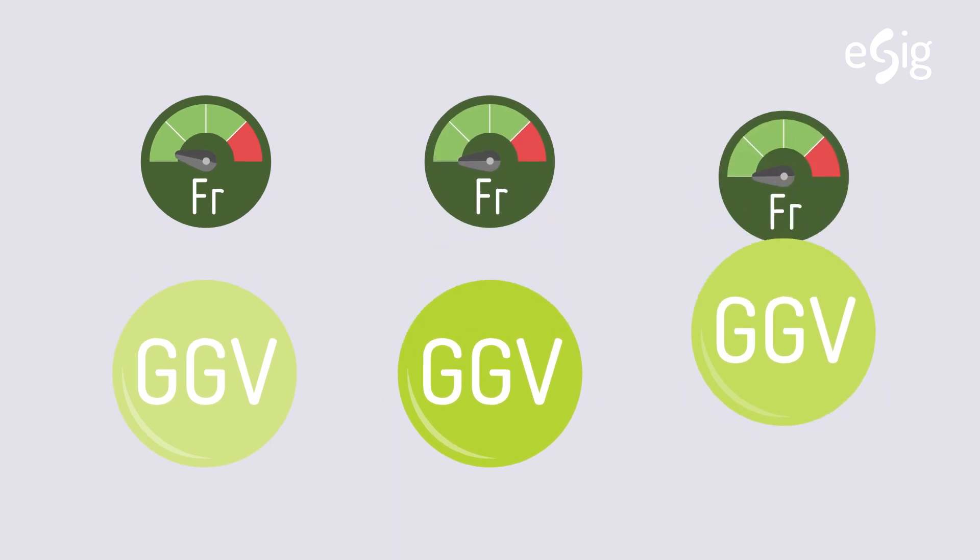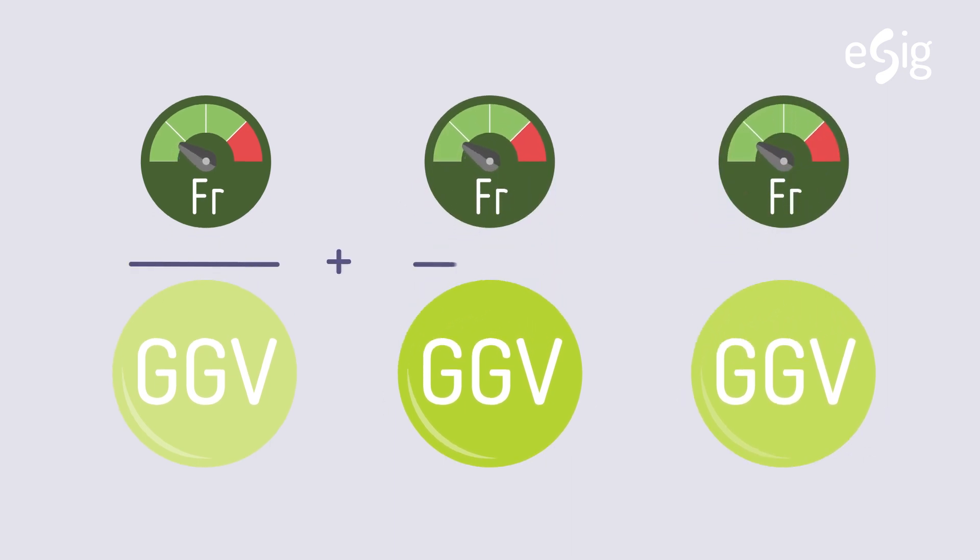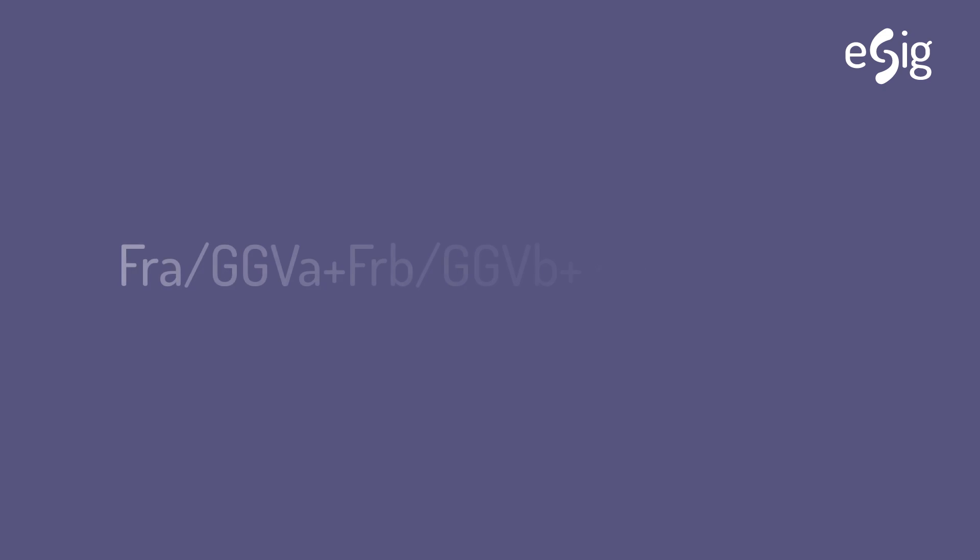The measured fractions of each GGV is divided by its own GGV, which added up give the reciprocal of the whole solvent OEL. Mathematically, the RCP is expressed as follows.